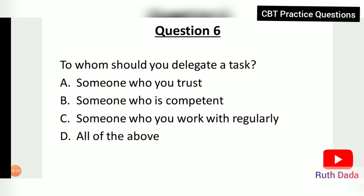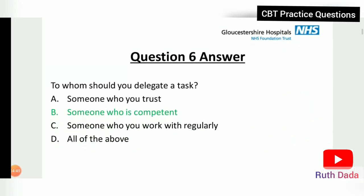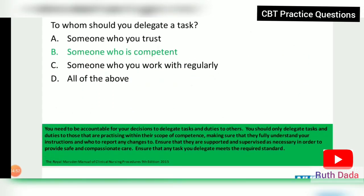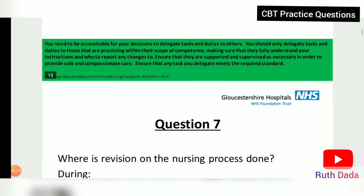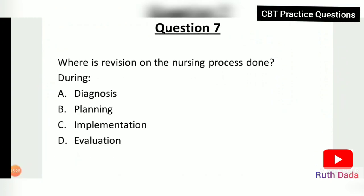Question 6: To whom should you delegate a task? The answer is B, someone with competency. You must be accountable for your decision to delegate tasks, only delegating to those practicing within their scope of competence, ensuring they fully understand your instructions, know who to report changes to, and are supported and supervised as necessary to provide safe and compassionate care.